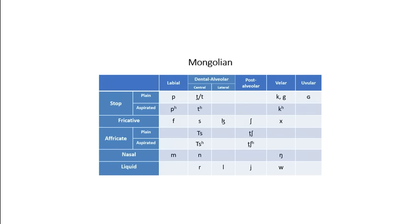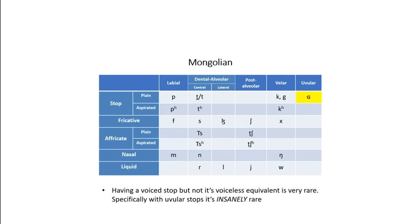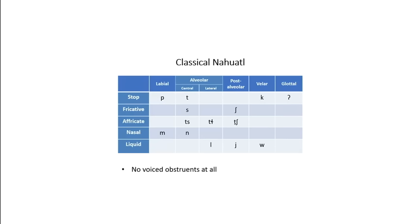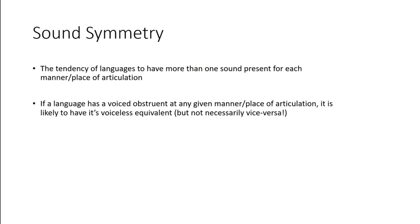All natural languages in the world feature at least some voiceless obstruents, but not all natural languages have voiced obstruents. If a language has a voiced version of an obstruent, then it will very likely have its voiceless equivalent.